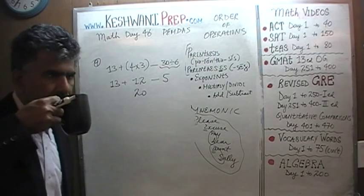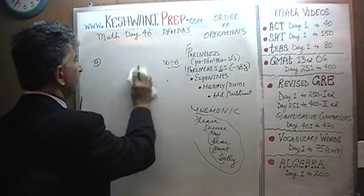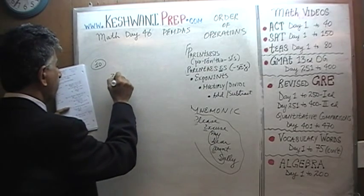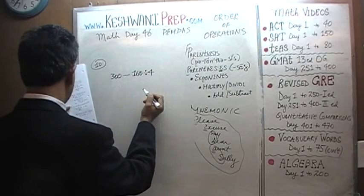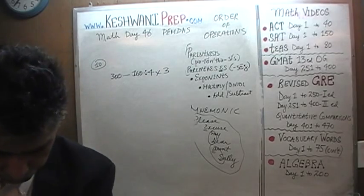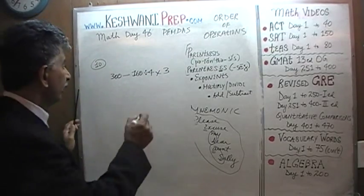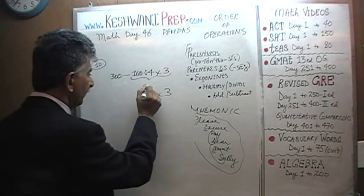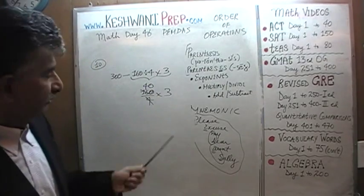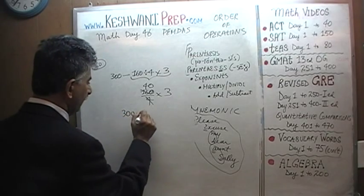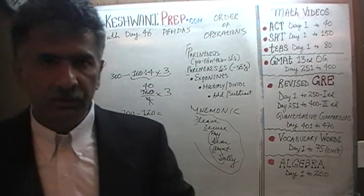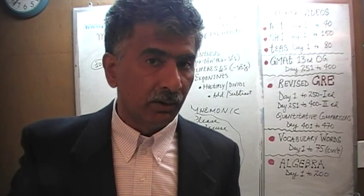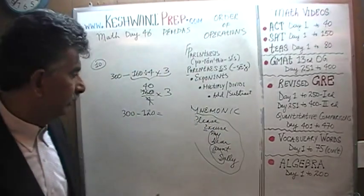Number 10: 300 - 160 ÷ 4 × 3. All the multiplication and division we do together first: 160 ÷ 4 = 40, times 3 = 120. So it's 300 minus 120. We know 300 minus 100 would be 200, but we are subtracting 120, which is 20 more, so the answer is 180.